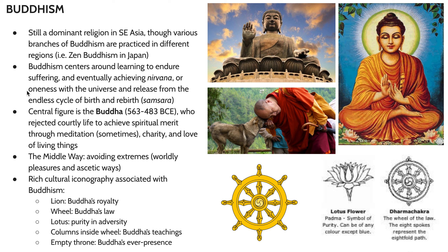The central figure of Buddhism is, of course, the Buddha — a name meaning 'the enlightened one' — describing the historical figure Siddhartha Gautama, who lived around 563 to 483 BCE. He was a prince who rejected the courtly life to achieve spiritual merit through charity, loving kindness, and in some sects, meditation. One of his main focuses was the middle way: avoiding extremes.